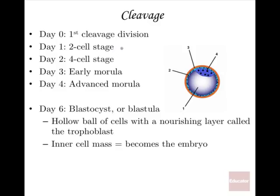Day one: two cells divide to make four cells. By approximately day three, there's an early morula — a dense ball of cells. By day four, more divisions produce an advanced morula with a few more cells. Flash forward to nearly a week in — day six — and we finally have a blastocyst, also called a blastula.